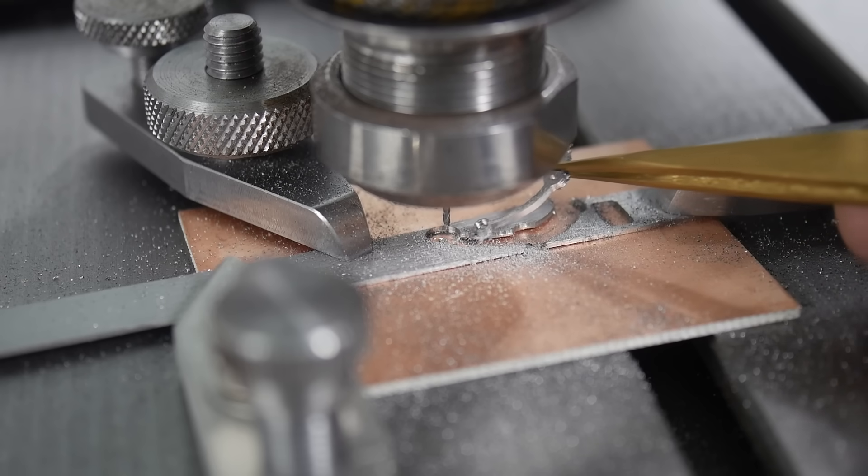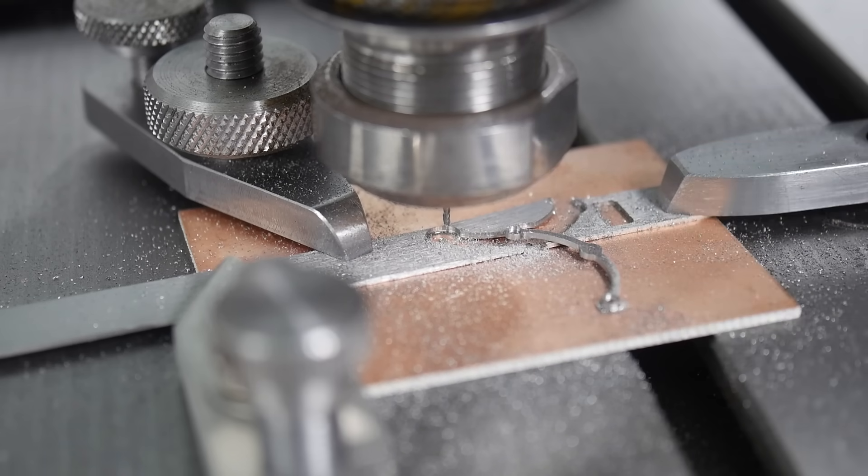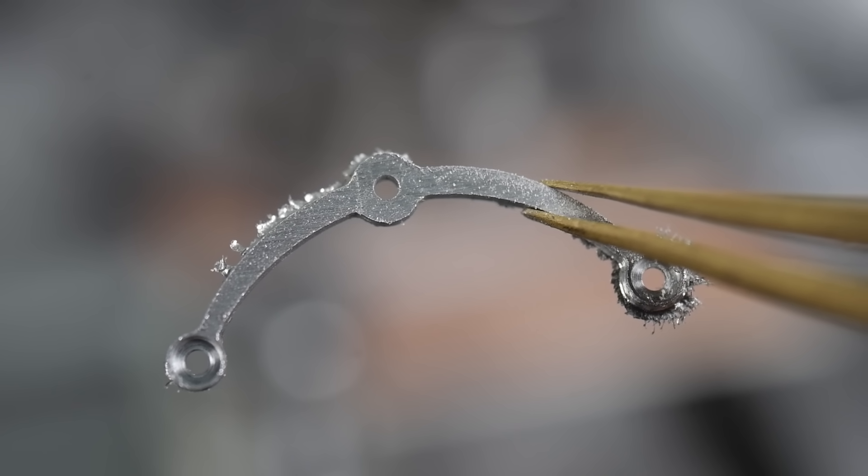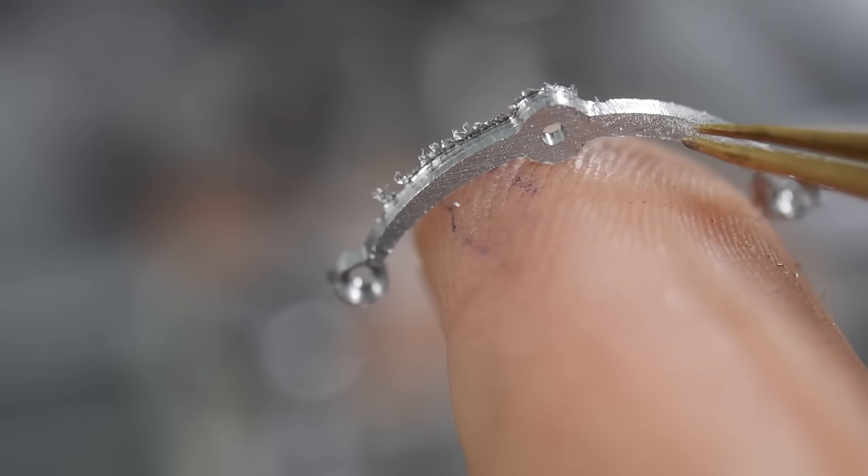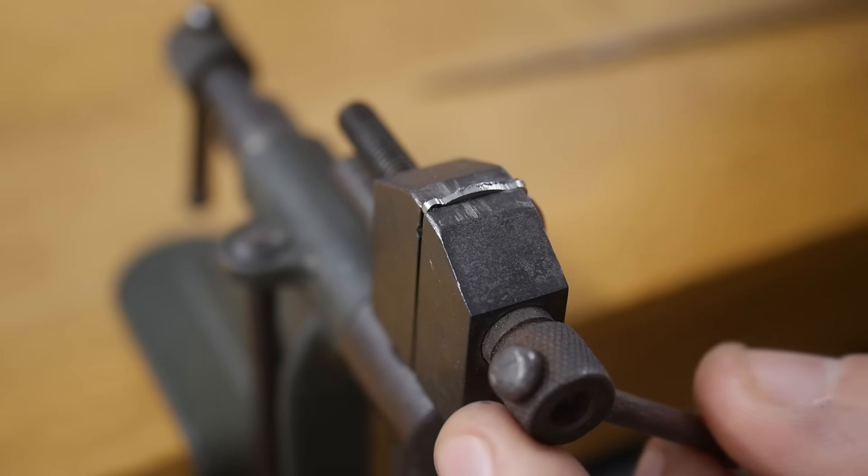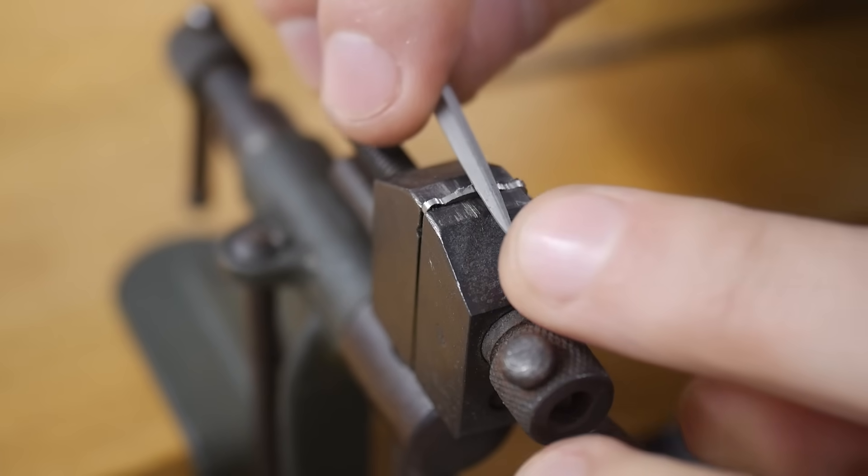This is a smaller bridge designed to support the third wheel. Daniels used a potence instead of a bridge for this, which is essentially a bridge but screwed down only on one side. I think the potence is easier to make, but I prefer the aesthetics of the bridge here.